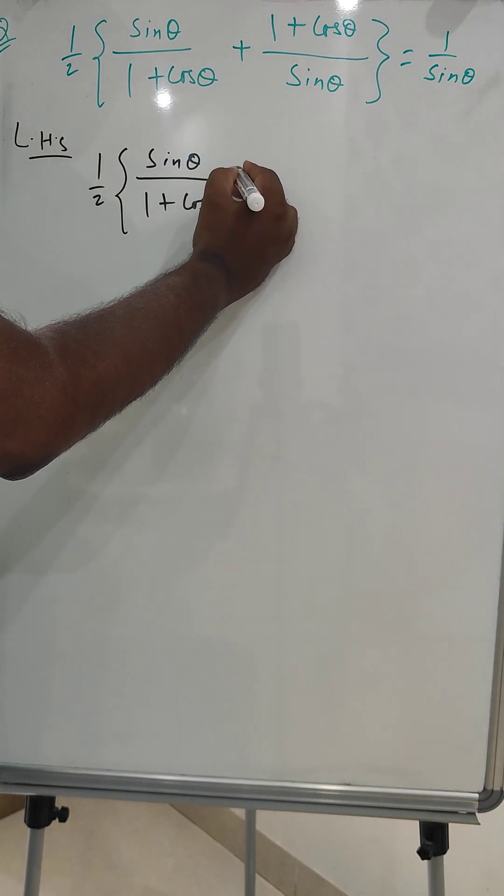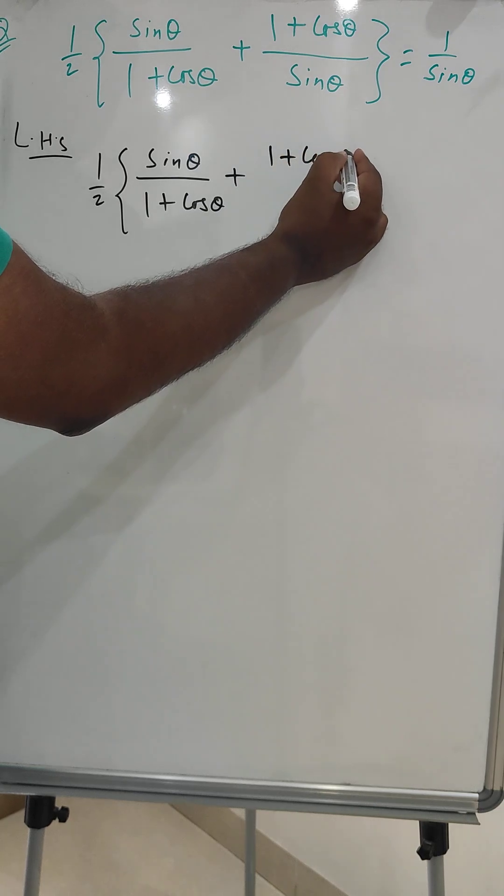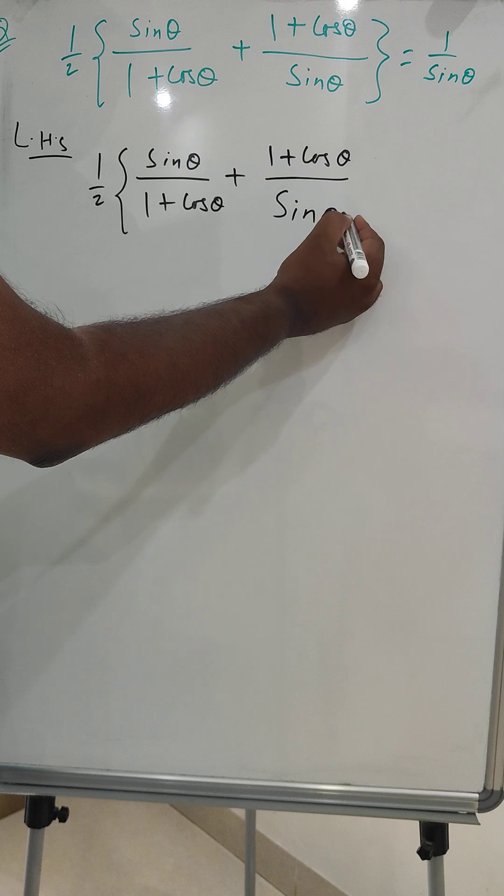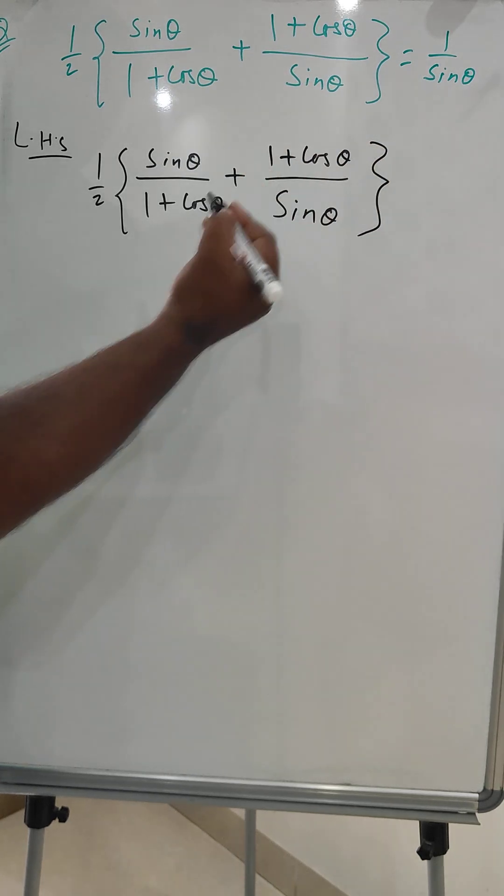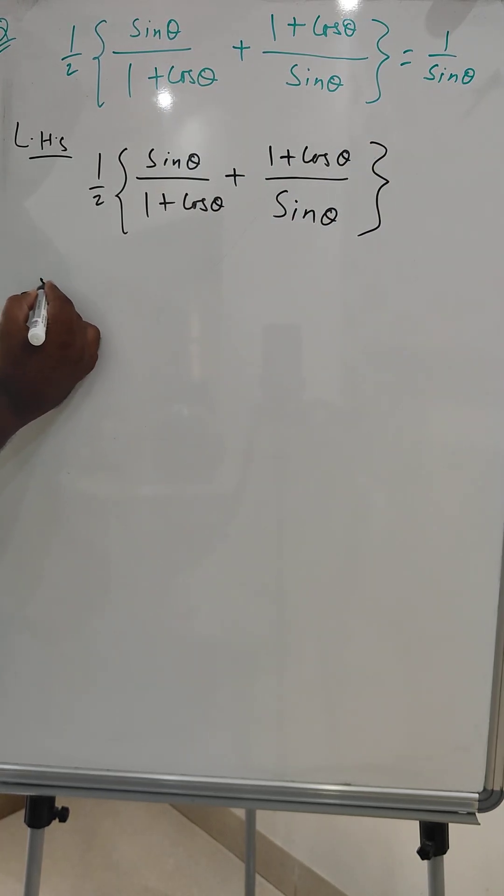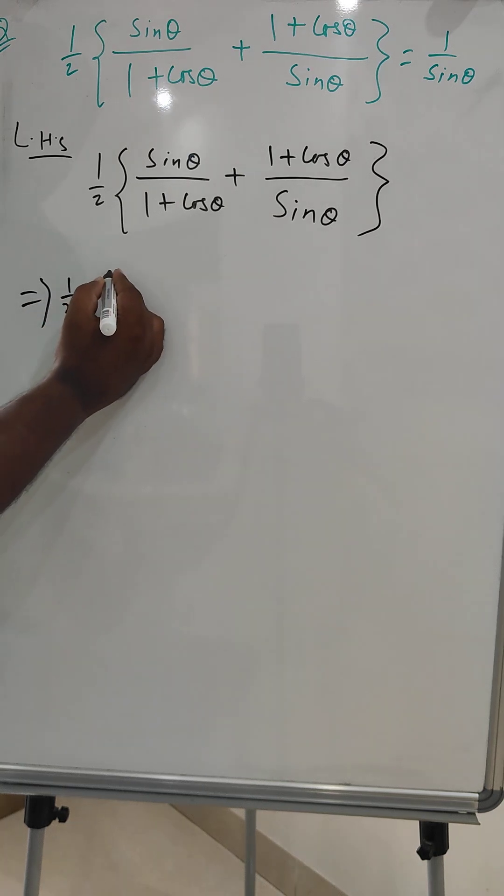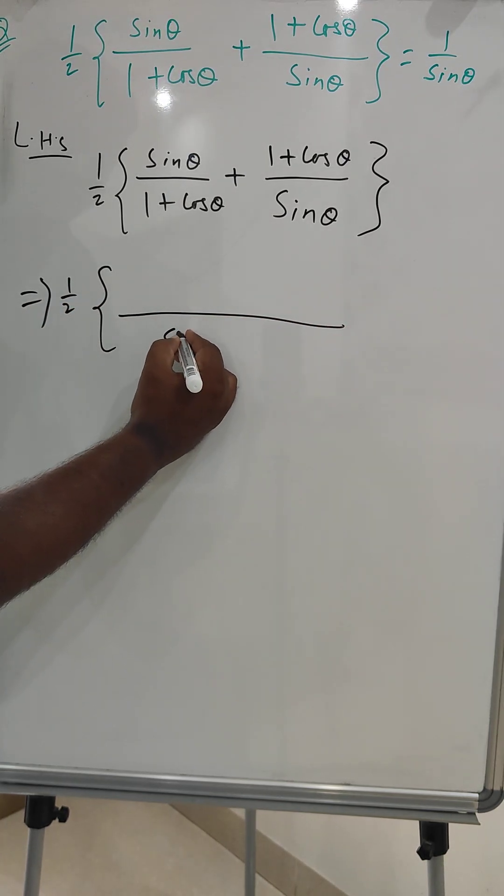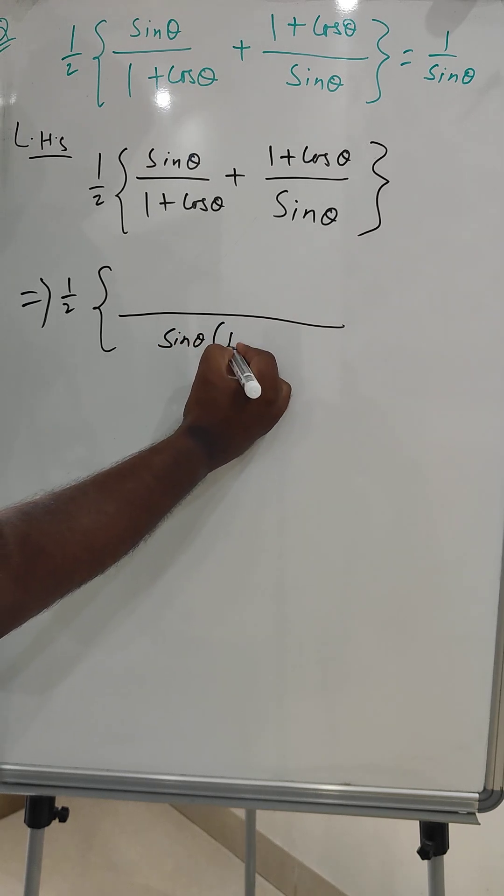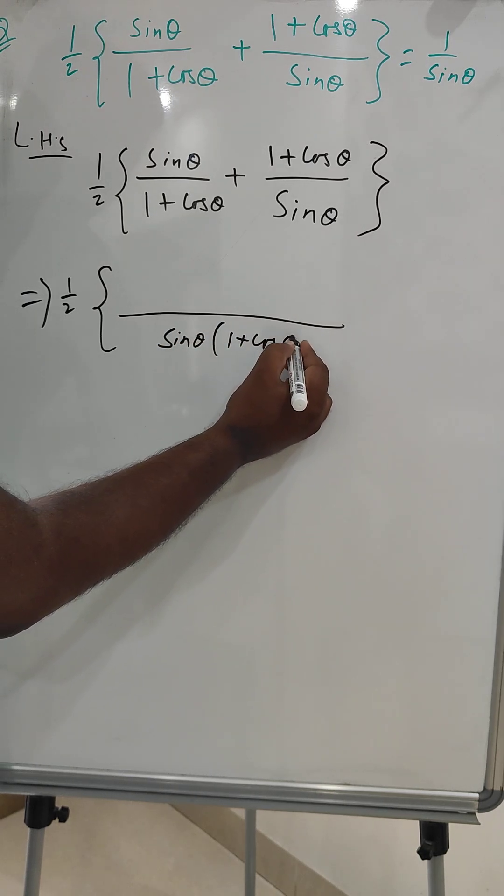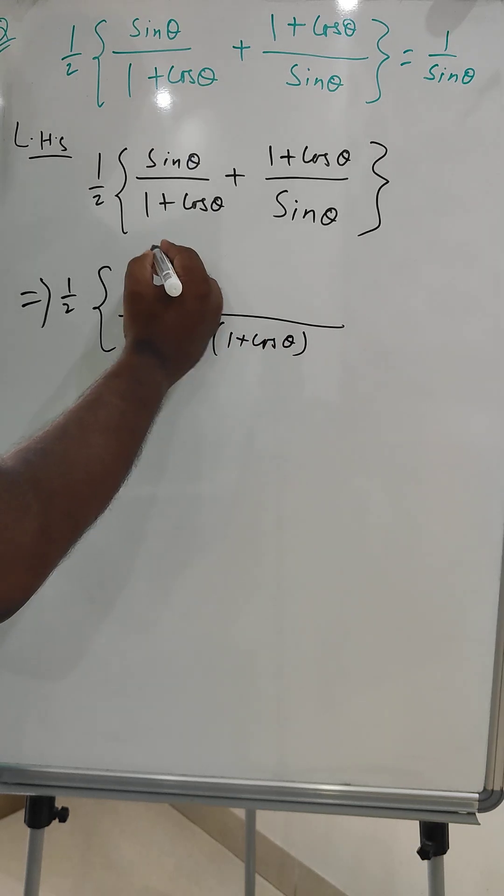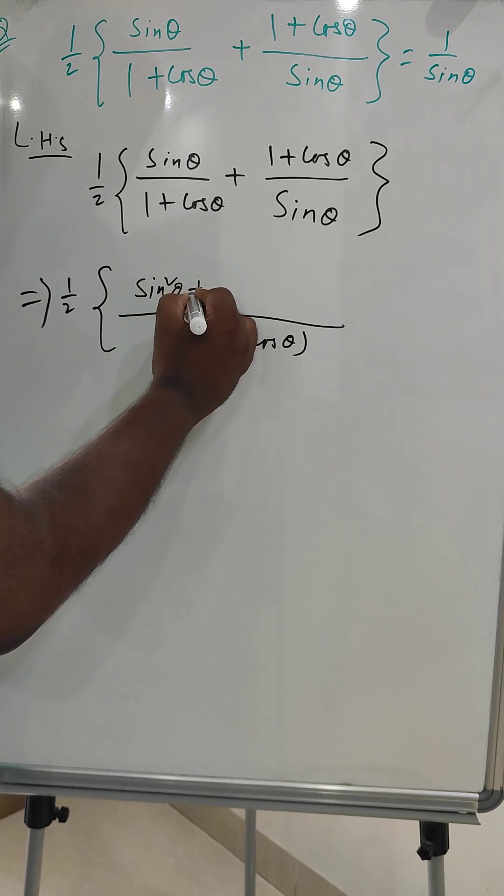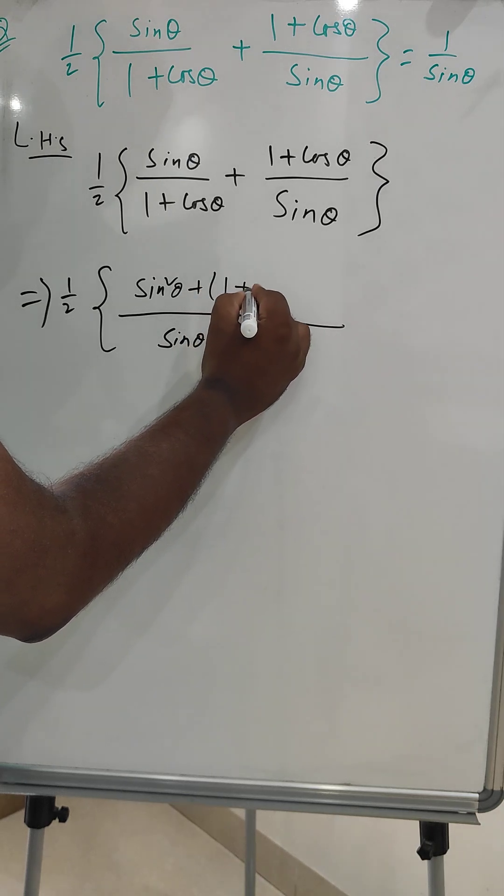So now, next step: 1/2 times, in curly braces, we can take common denominator sine theta (1 + cos theta). Here it will become sine squared theta plus (1 + cos theta) whole squared.